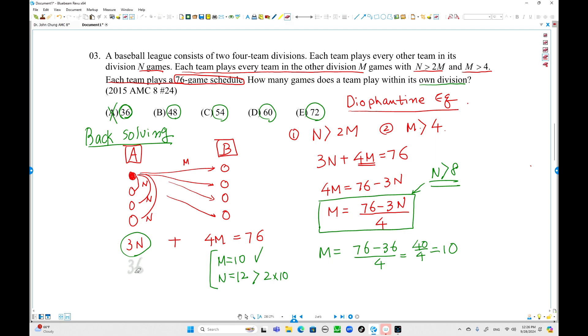Check out the 48. If 3N is 48, then 76 minus 48 is 28. 28 over 4 equals 7, so M is 7. N equals 48 divided by 3, which is 16. Check it out: M is greater than 4? That's true. Is 16 greater than 2 times 7? This is 14. That is true. That's the answer.